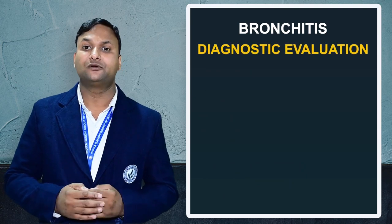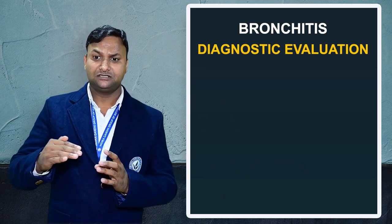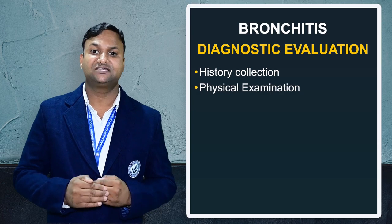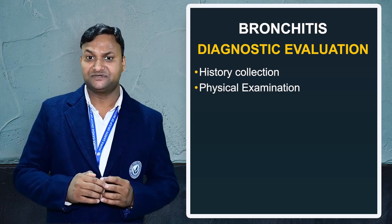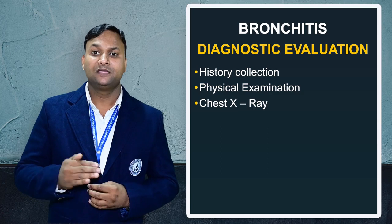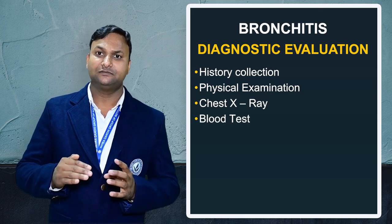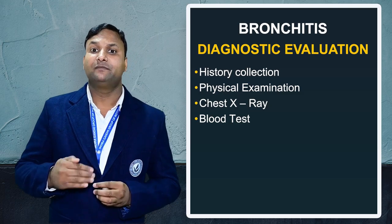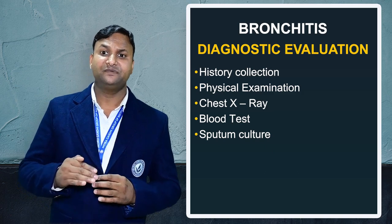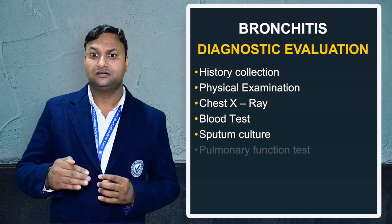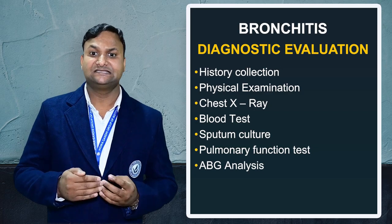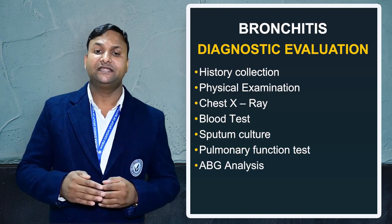Next, what are the diagnostic evaluations for bronchitis? When a patient presents with bronchitis, first do a proper history collection, physical examination, and systematic examination. This helps identify whether it is bacterial or viral bronchitis. Bronchoscopy is also performed. For chronic bronchitis, a pulmonary function test (PFT) can be done to understand properly. Then arterial blood gas (ABG) analysis is also performed. These are the diagnostic criteria.